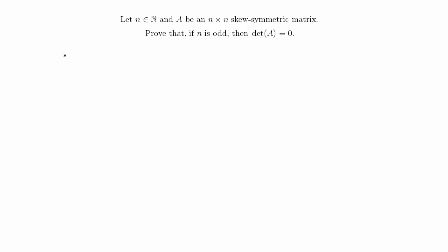Hey guys, in this video I'm going to do another proof from linear algebra. This proof says: let n be a natural number and A be an n by n skew symmetric matrix. Prove that if n is odd, then the determinant of A is equal to 0.